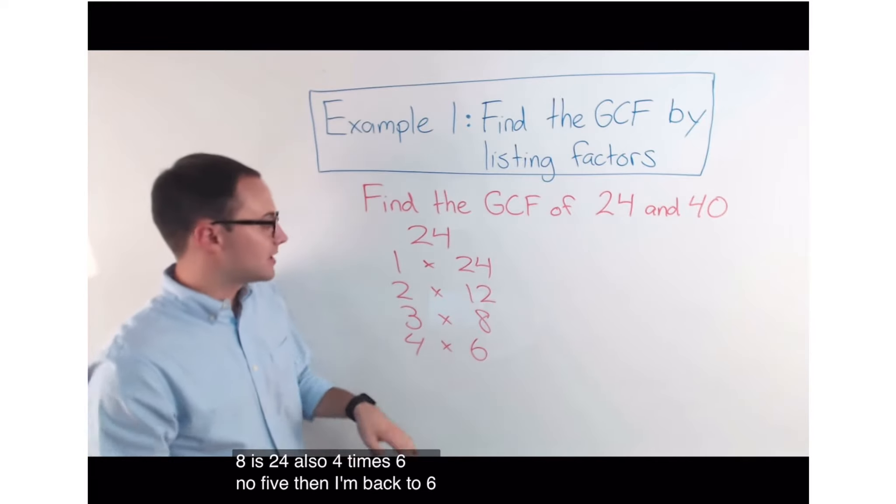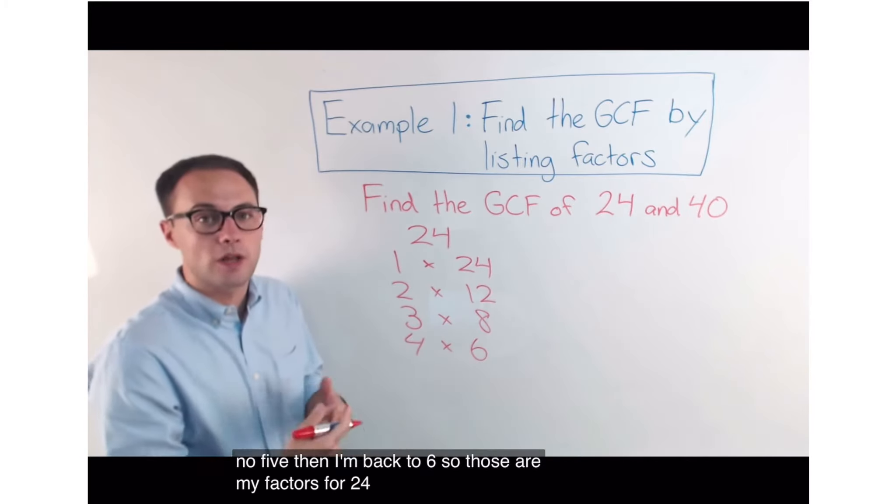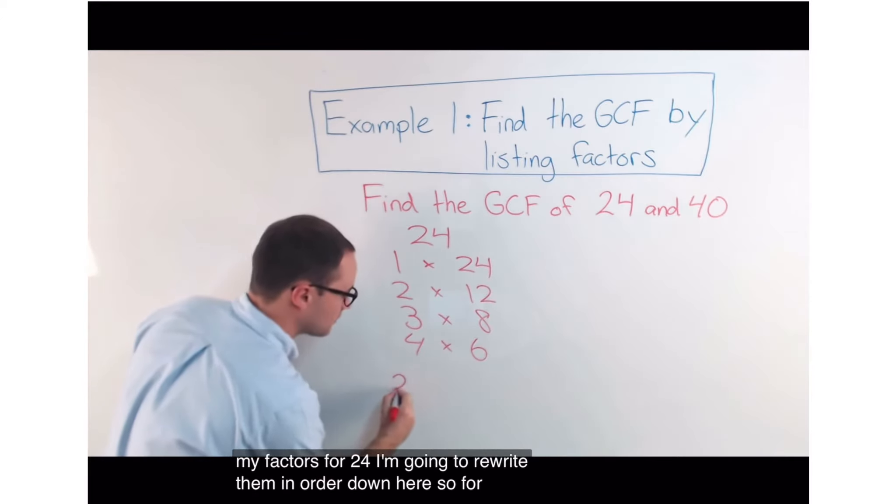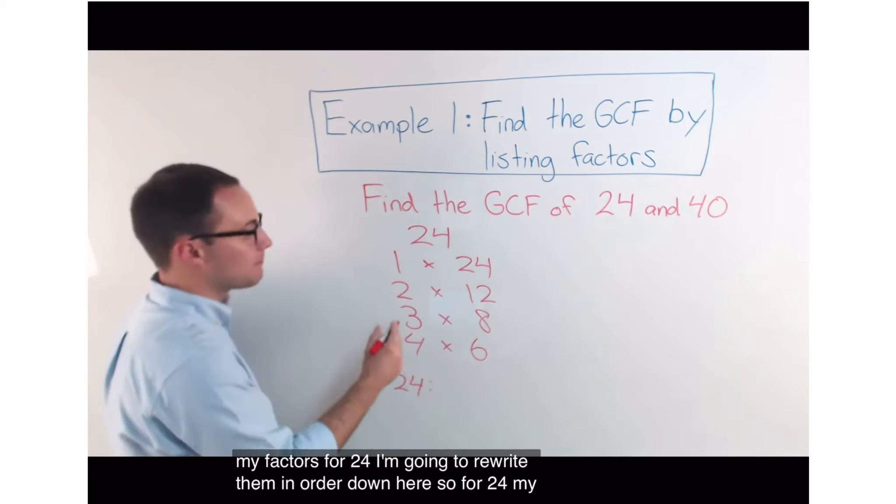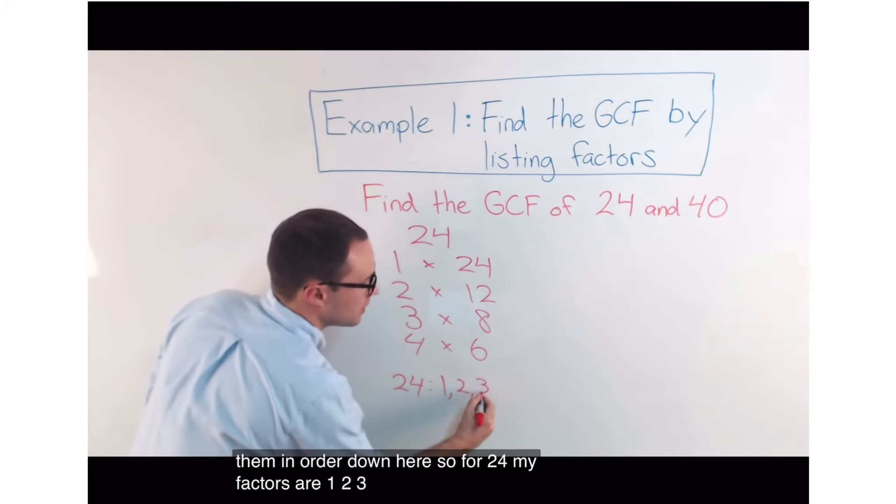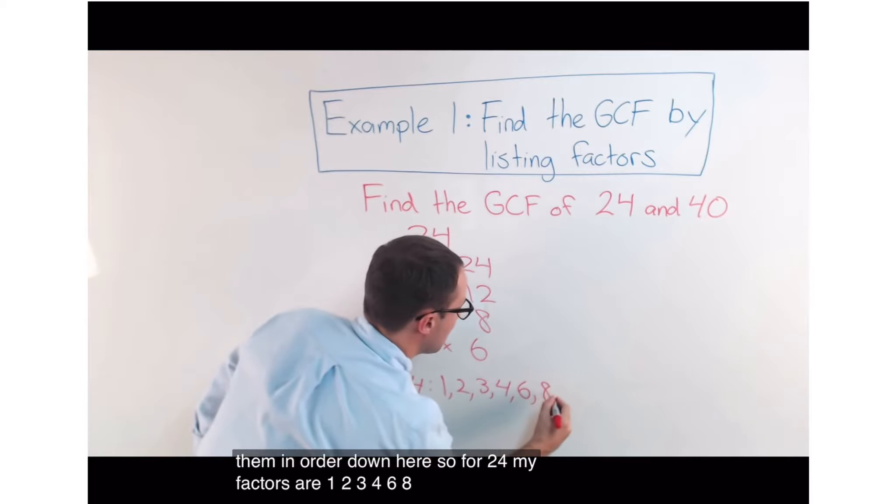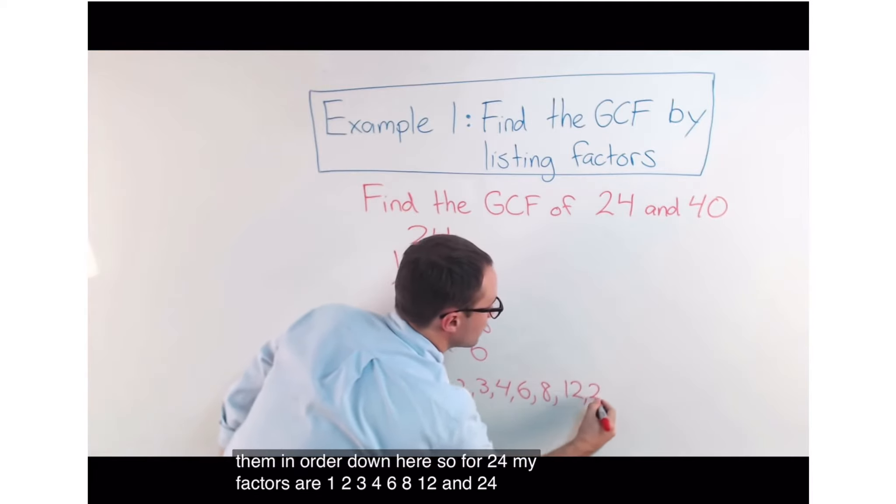I know 3 works. 3 times 8 is 24. Also, 4 times 6. No, 5. Then, I'm back to 6. So, those are my factors for 24. I'm going to rewrite them in order down here. So, for 24, my factors are 1, 2, 3, 4, 6, 8, 12, and 24.